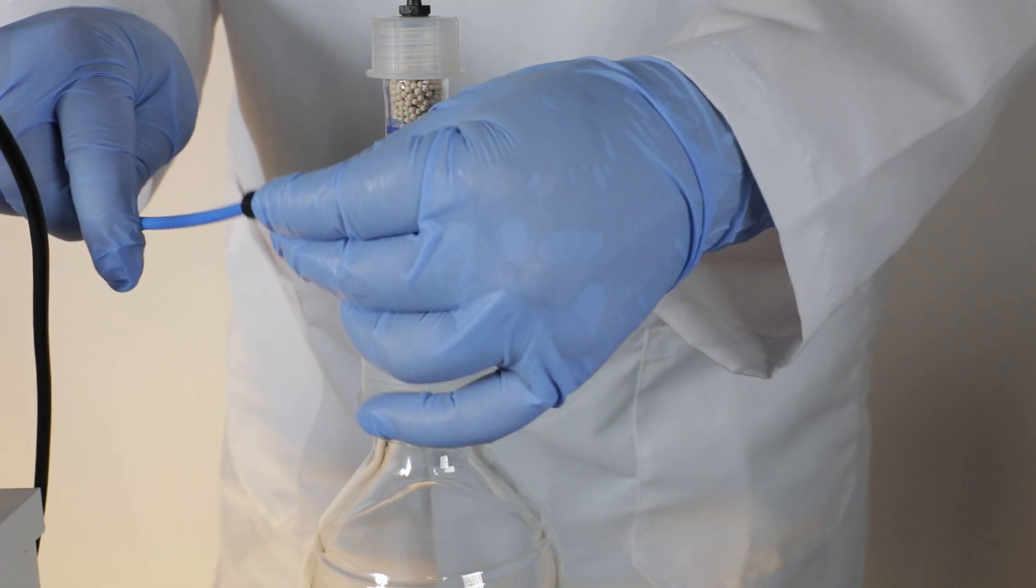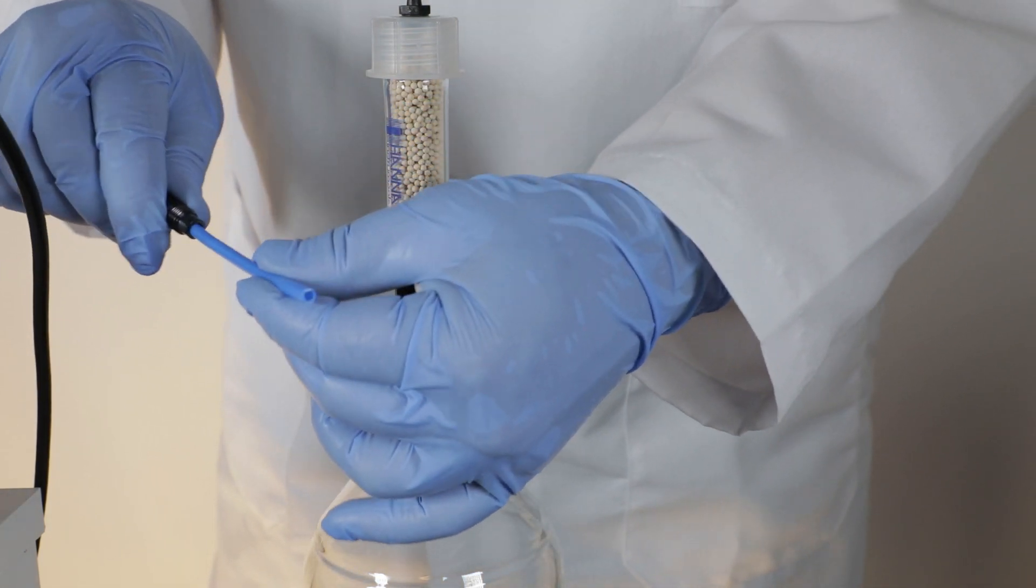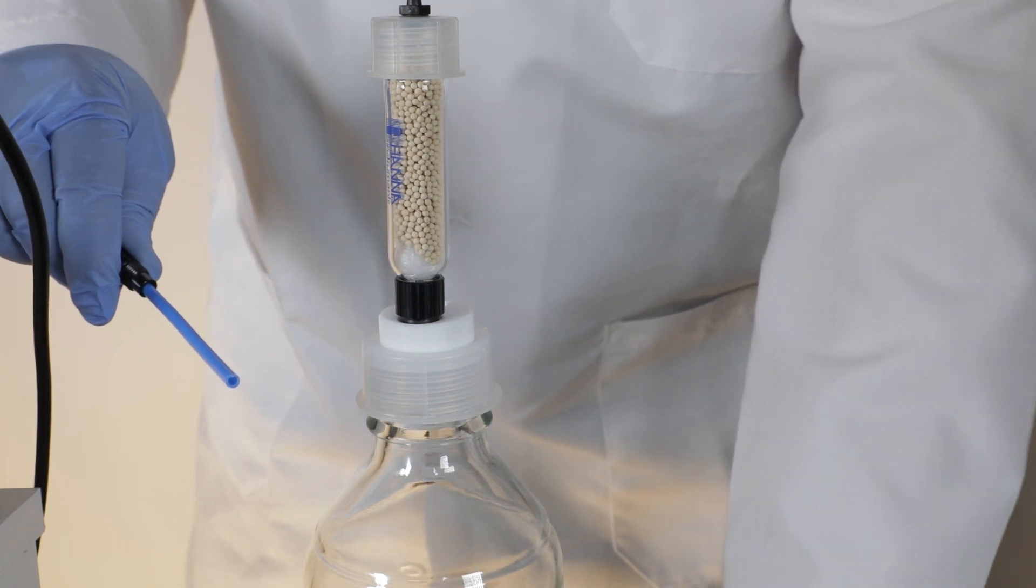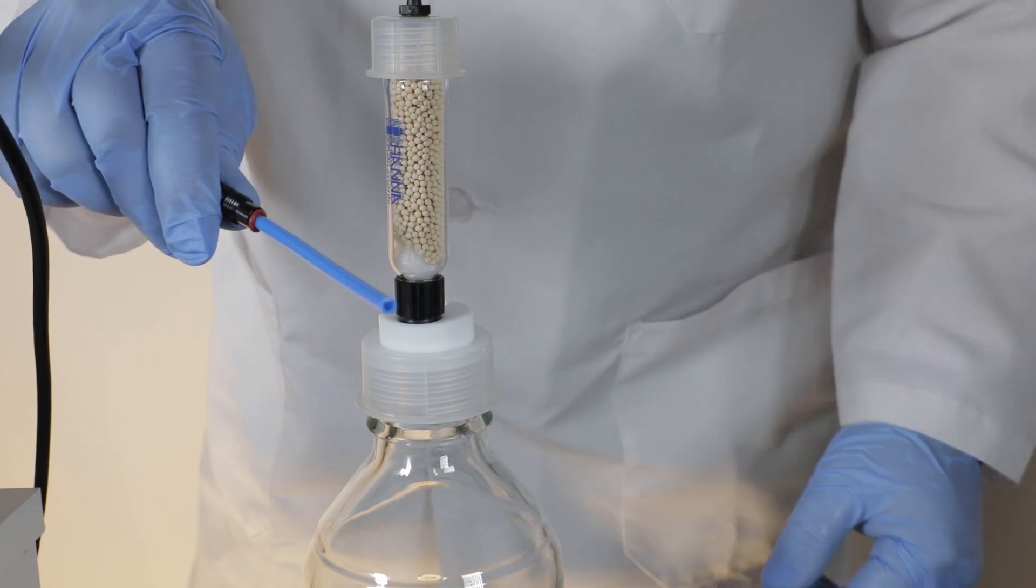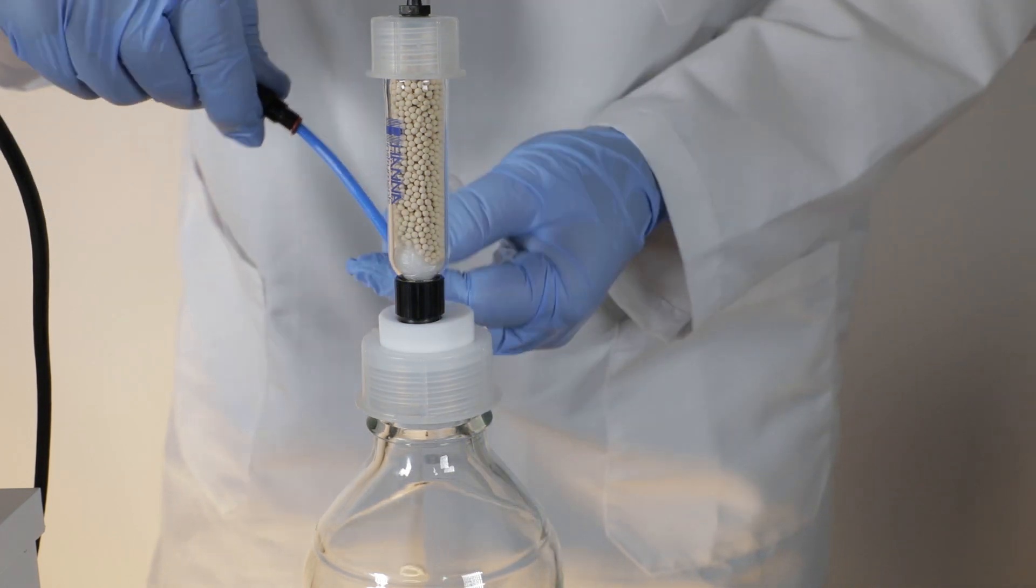Now, insert the tubing from the right side port on the reagent exchange adapter into the 5mm fittings and red O-ring. Push the tubing down into the waste bottle and screw the fittings tight onto the bottle top.